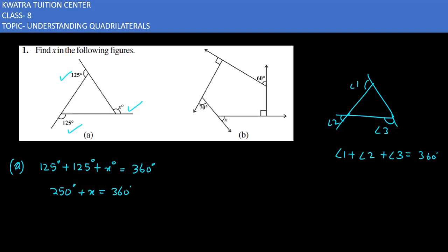Which property have we used? The sum of exterior angles is 360 degrees. So x value will be 360 minus 250, which gives you x as 110 degrees.